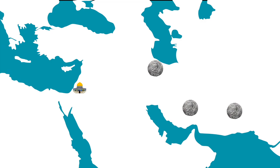Since the Arabs continued to use Persian archetypes for their coins, it stands to reason that they also used Persian symbolism. For the Sasanian kings, coins were a means of royal propaganda through which they proclaimed their heritage from the gods. But the new Arab rulers could no longer claim to be descendants of the gods — that would have been heretical for them. Their authority therefore had to be justified in another way.